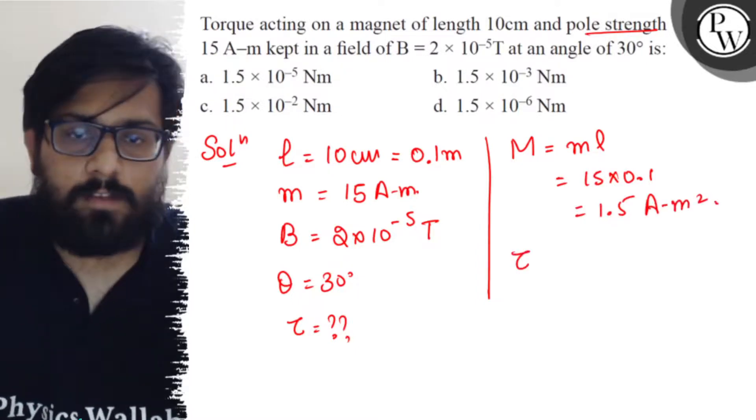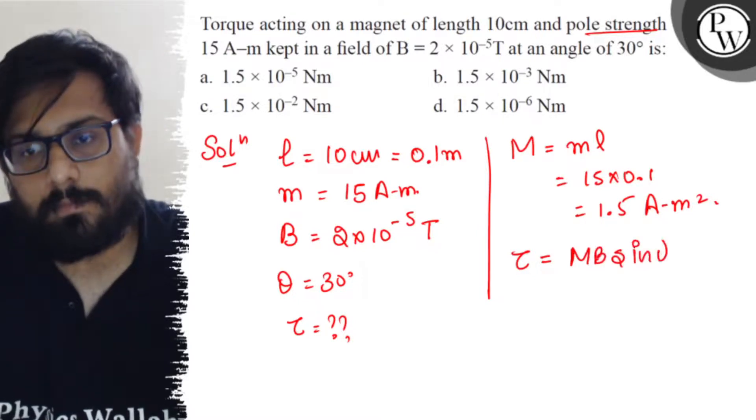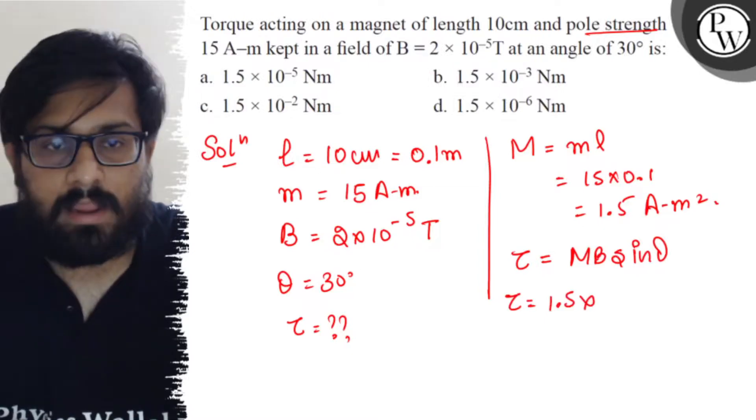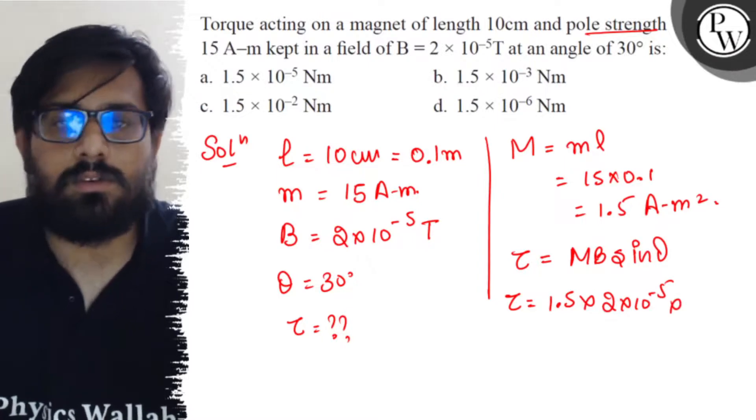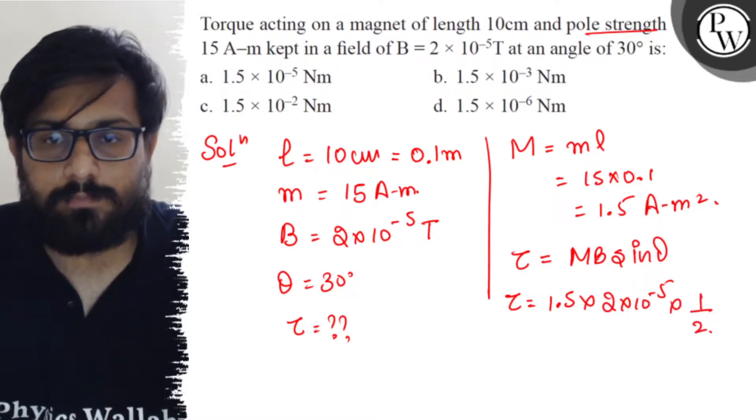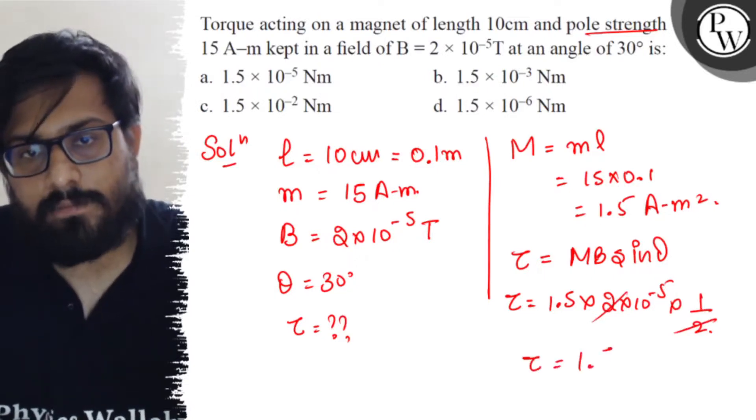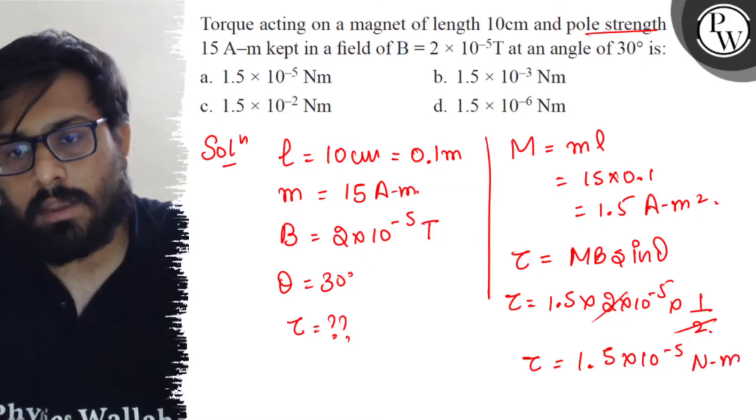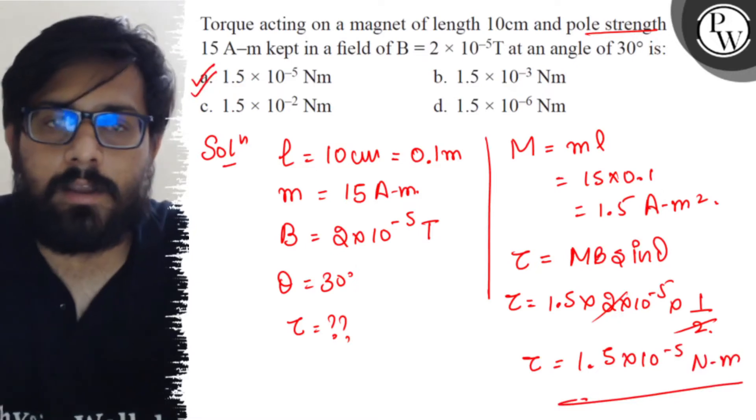We have to calculate the value of tau. It comes out to be nothing but MB sin theta. So tau comes out to be 1.5 into B, which is 2 into 10 to the minus 5, into sin 30. Sin 30 can be written as 1 by 2. Two gets canceled out, and it comes out to be 1.5 into 10 to the minus 5 newton meter, which is option A. So your option A is absolutely correct.